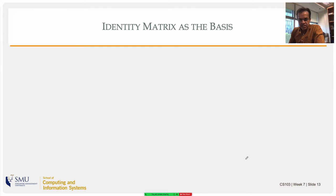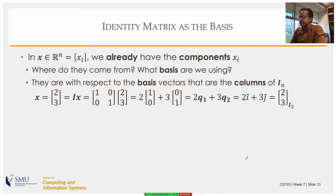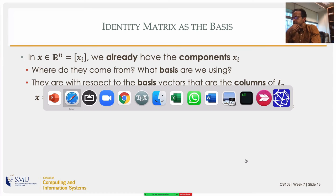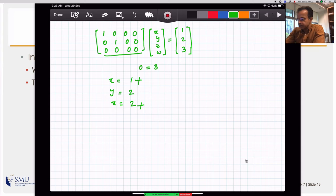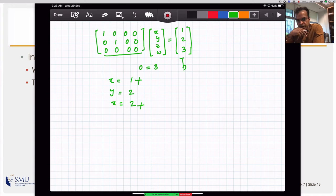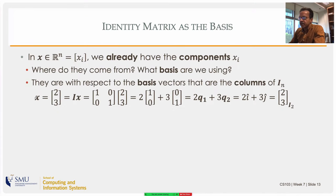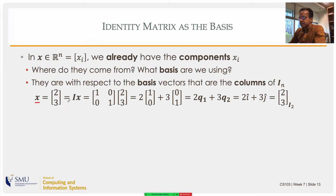The best possible basis set you can have is the identity matrix. When I specify a vector, am I already giving you the components? For instance, a vector b already comes with a set of components. What basis do those components refer to? The answer is they are based on the identity matrix. Suppose I have a vector in R^2 with components 2 and 3 — where do those numbers come from? They come from the identity matrix, because multiplying by I doesn't change the vector.